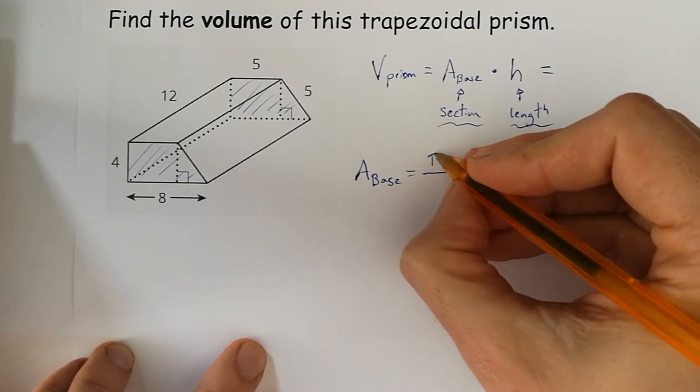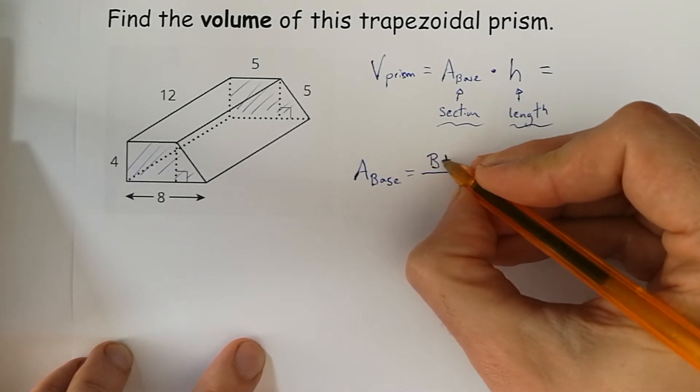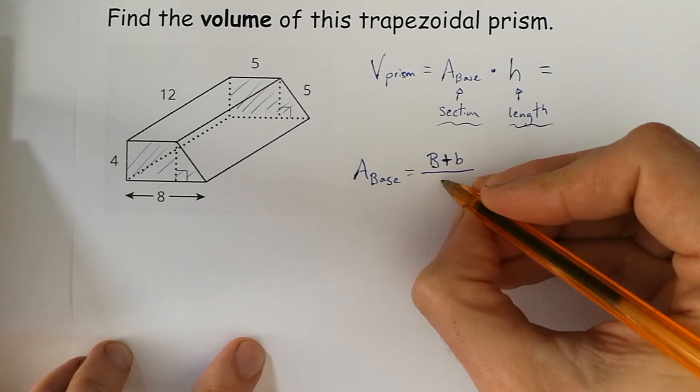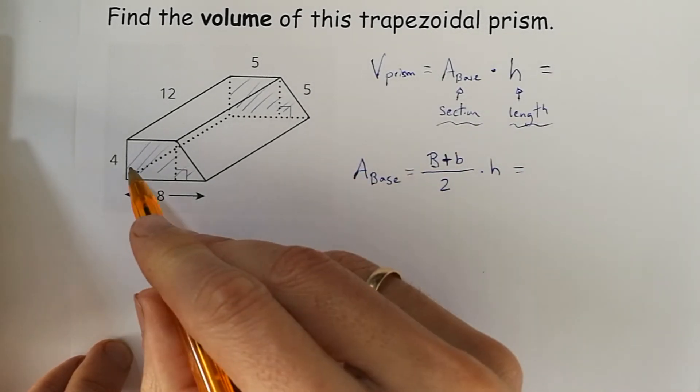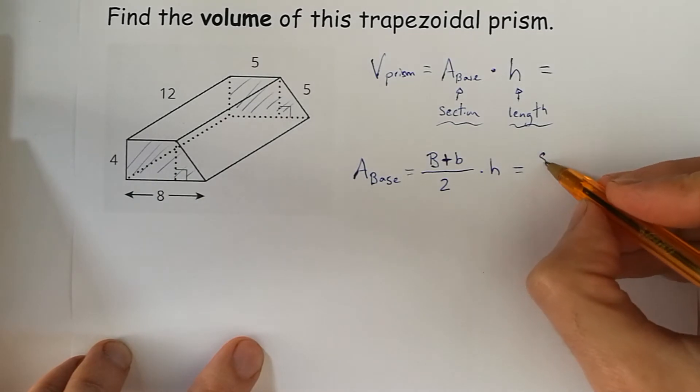so the formula is base plus the other base over 2 times height. The bigger base is 8,